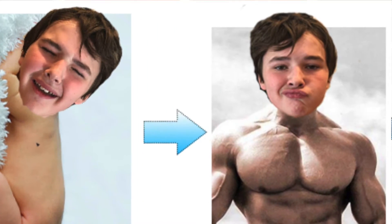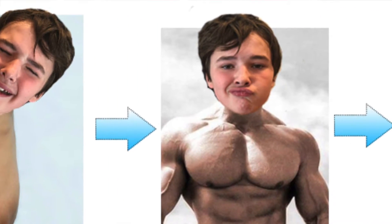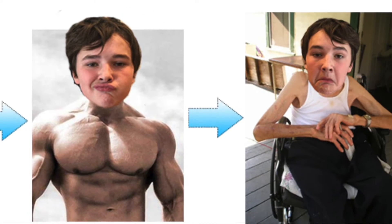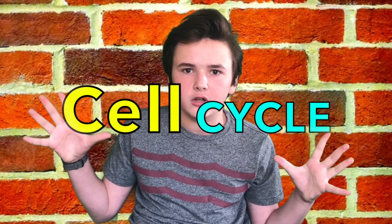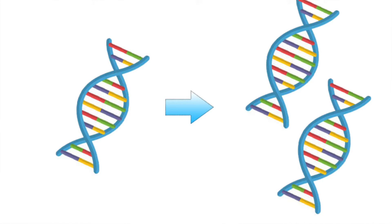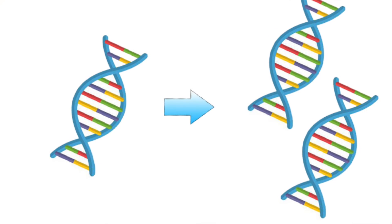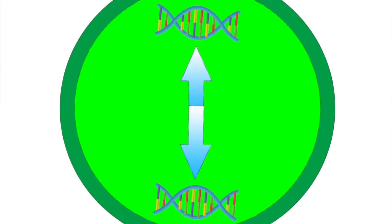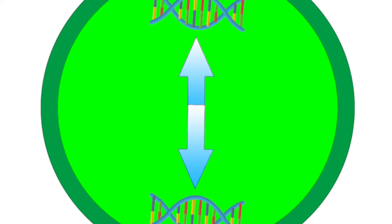Now we all know that we keep growing as we get older until we hit a certain age. But our cells aren't growing — they keep dividing in a process called the cell cycle. During the cell cycle, cells reproduce DNA and eventually separate this DNA to two separate sides of the cell.